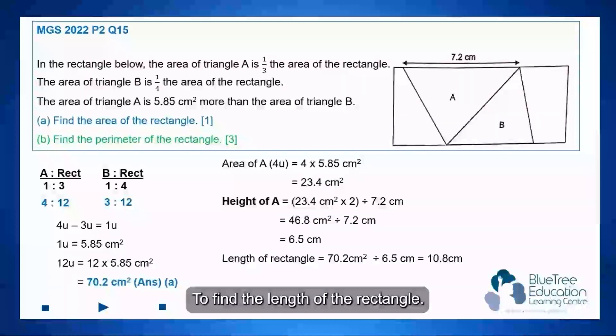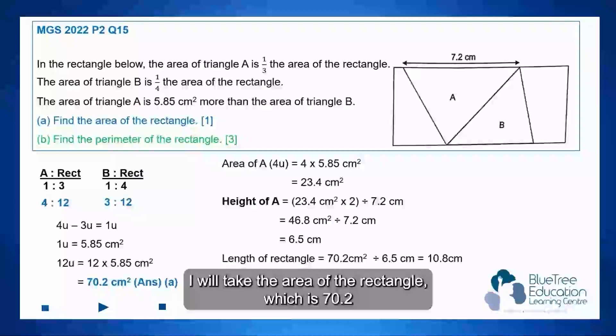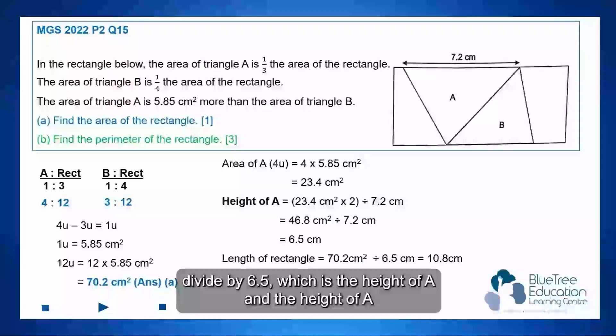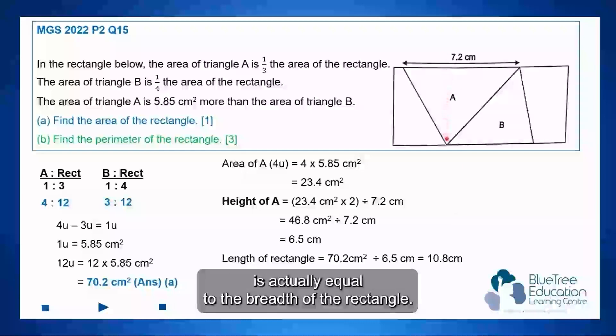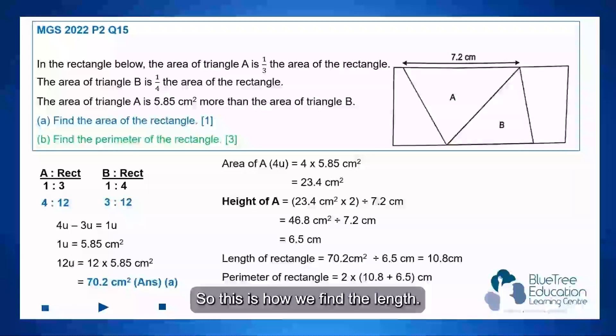To find the length of the rectangle, I will take the area of the rectangle, which is 70.2, divide by 6.5, which is the height of A. And the height of A is actually equal to the breadth of the rectangle. So this is how we find the length.